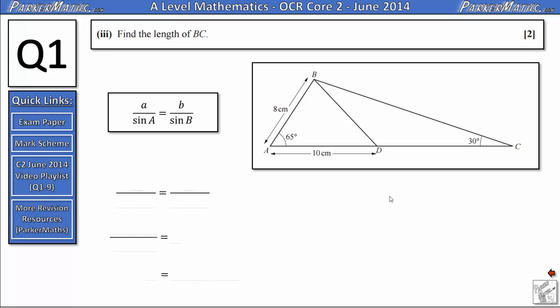In part three we need to find the length of BC. This time we're going to consider the larger triangle. And in the larger triangle we know one of the sides here and we know two of the angles. This 10 centimeters is only from A to D so that's not the length of this side and we can't use it when calculations for this triangle. So if we know two angles and one side we can use the sine rule.